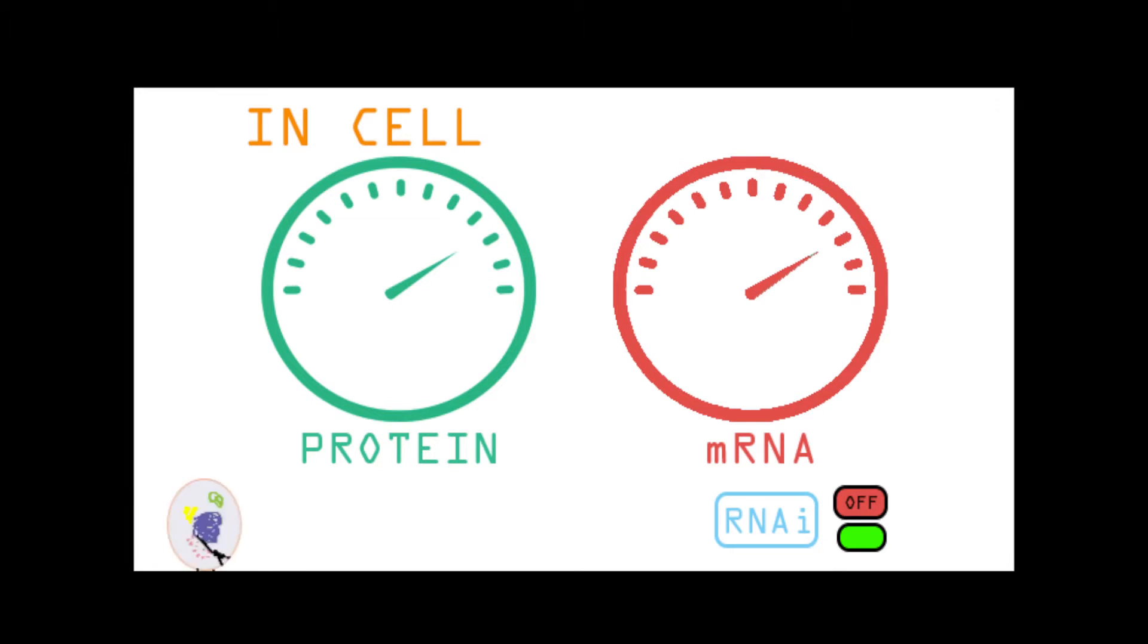RNAi lowers the amount of protein translated by lowering mRNA levels. A story cannot be translated if the transcribed copies were destroyed.